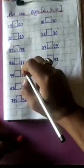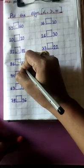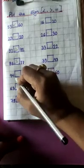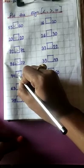Now next one: 86 and 77. 86 is greater than 77. Greater than ka sign — symbol — okay. Now next: 94 and 96. 94 is less than 96.